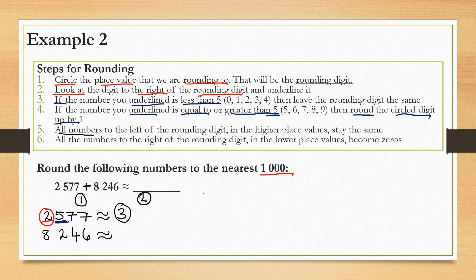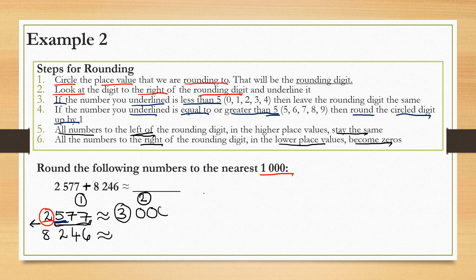Step 5: all the numbers to the left of the rounding digit stay the same — there are no numbers to the left of the rounding digit here, so that step doesn't apply. Step 6: all the numbers to the right of the rounding digit in the lower place values become zeros. There are three numbers to the right of the rounding digit, so we include three zeros. This means that 2,577 is approximately equal to 3,000 when we round to the nearest thousand.